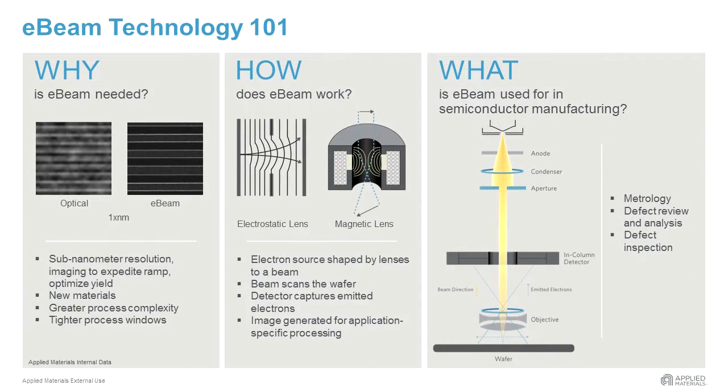While the electron beam scans the wafer, it interacts with the material and generates signal electrons. These emitted electrons are collected and used to form an image. Algorithms are tailored to the specific application to extract the relevant image information.